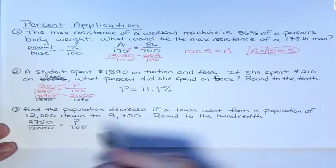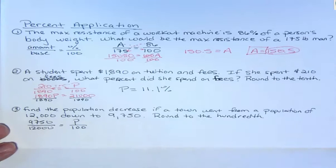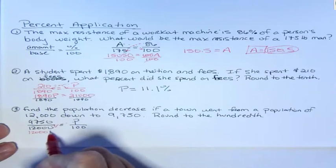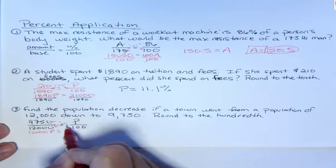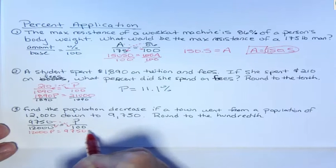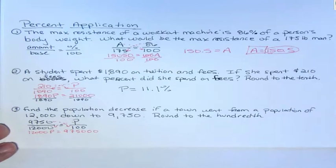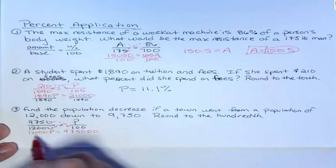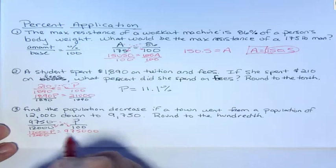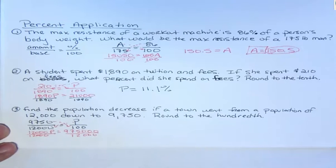If I cross multiply here, I get 12,000p. And I cross multiply the other way, I get 9,750 and two more zeros, right? That's easy to do when you're multiplying by a power of 10 like that. So I'm going to divide both sides by the coefficient, which is 12,000.